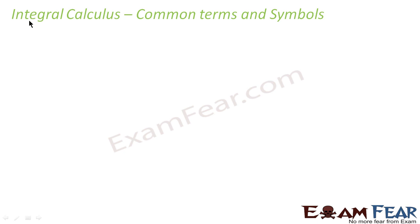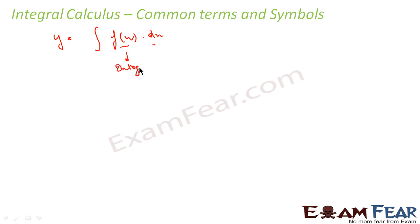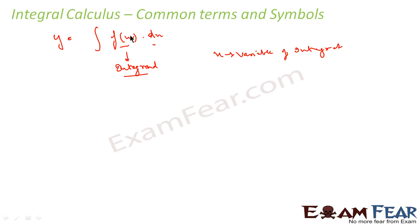Let's discuss common terms used in integration. Integration is written as y = ∫f(x) dx. The function f(x) for which you have to find the integration is called the integrand. The x here is the variable of integration. So the main term is: f(x) is called the integrand. If you have a function, dot d of some variable, with the integral symbol, then that is called integration.